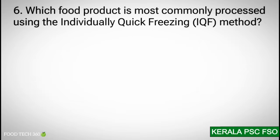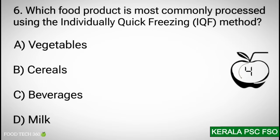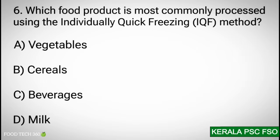Question 6: Which food product is most commonly processed using the Individually Quick Freezing (IQF) method? Options: a) vegetables, b) cereals, c) beverages, d) milk. Correct answer: a) vegetables.